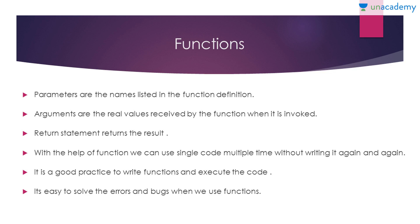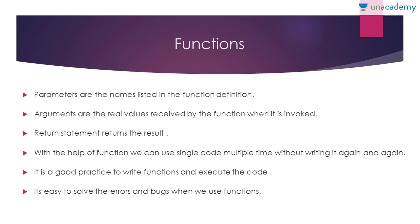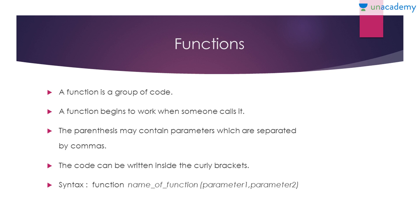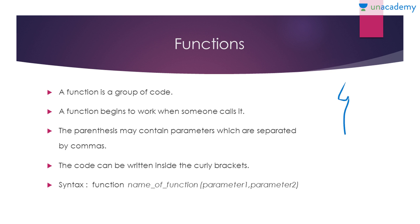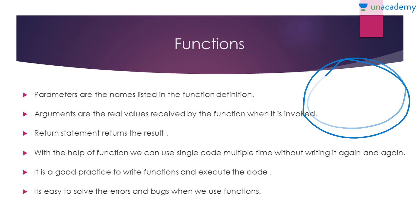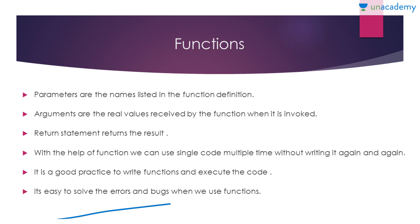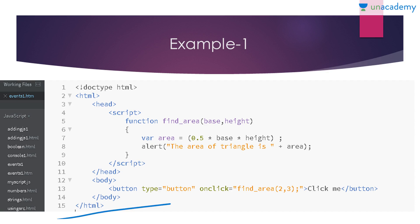Arguments are the real values received by the function when it is invoked. For example, if I want to add two values I create a function 'add' with parameters 'digit1' and 'digit2'. When I call the function with arguments 2 and 4, digit1 becomes 2 and digit2 becomes 4, and it returns 6. The return value means the function executes the code and returns the result to us. Using functions we can reuse single code multiple times and it's easy to solve errors and bugs.